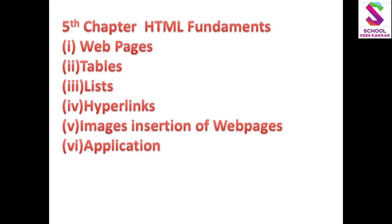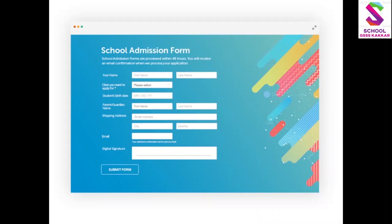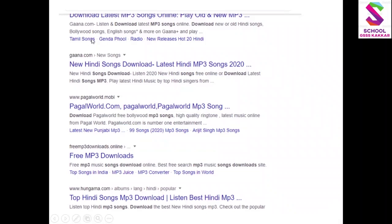Our fifth unit is HTML — Hypertext Markup Language — a programming language used to make webpages. We will learn to create webpages with tables, lists, hyperlinks, images, and online application forms with text boxes and button boxes. Hyperlinks appear as blue-colored links in a web browser; clicking them changes pages. All of these HTML concepts will be covered in this unit.